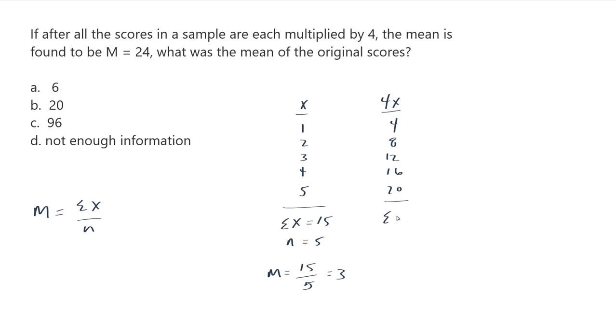If I add these up, I'm going to get, if you add these up, I'm going to get 60. And I still have five scores. And so when you work out the mean, it's 60 divided by 5. This ends up being equals to 12.